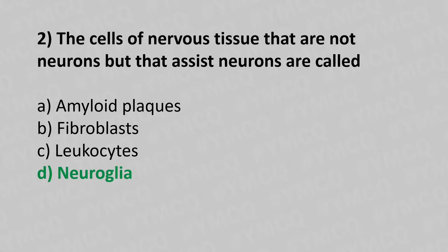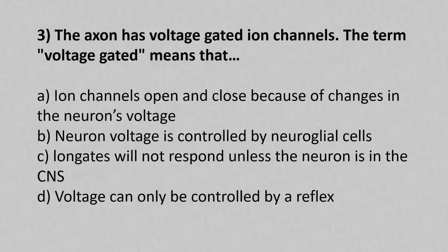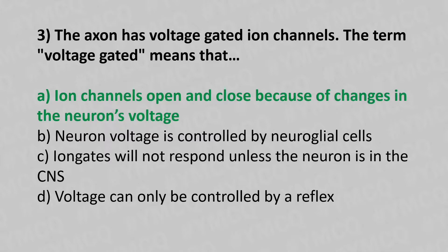Question 3: The axon has voltage-gated ion channels. The term 'voltage-gated' means — Option A: ion channels open and close because of changes in the neuron's voltage. Option B: neuron voltage is controlled by the neuroglial cells. Option C: it will not respond unless the neuron is in the CNS. Option D: voltage can only be controlled by the reflex. The answer is Option A — ion channels open and close because of the changes in the neuron's voltage.